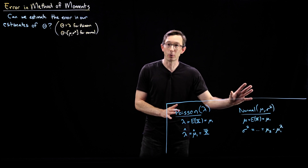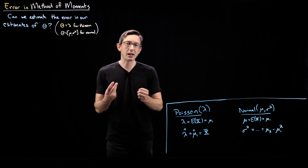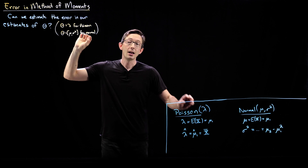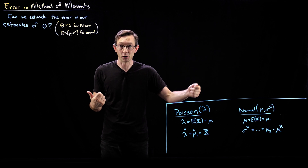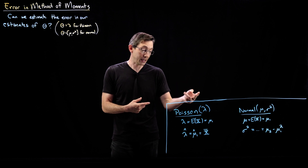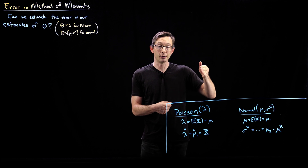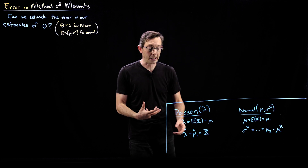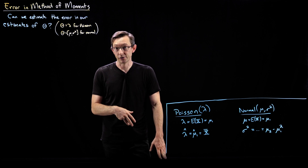Similarly, we have estimates for the normal distribution for the mean and variance. The rough idea is you take your parameters theta of your probability distribution and write those parameters in terms of the moments of the PDF. The first moment mu1 is the expectation of x, the second moment mu2 is the expectation of x squared, the third moment is the expectation of x cubed, and so on.